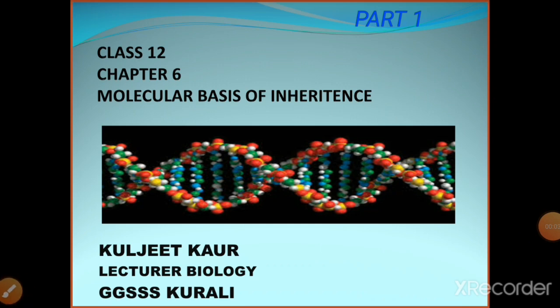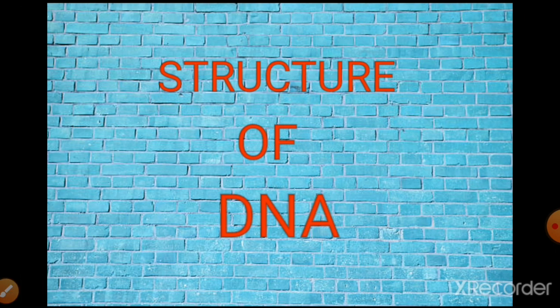Today we are going to start the next chapter, that is molecular basis of inheritance. We have already studied in the last chapter, that is principles of inheritance and variation. Chromosomes are actually the vehicles which carry the information from one generation to another generation, or which are responsible for inheritance. We are starting this chapter with the most interesting molecule in living beings, and that is DNA, which is the genetic material. First of all, I am starting this chapter with the structure of DNA, and slowly we will discuss that DNA is the genetic material.